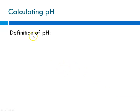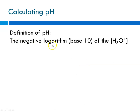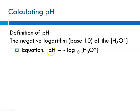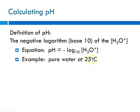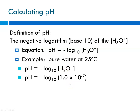How does this relate to calculating pH? The definition of pH is the negative logarithm base 10 of the concentration of the hydronium ion. In equation form: pH equals minus log base 10 of [H₃O⁺], where the brackets mean molarity (moles per liter). As an example for pure water at 25°C: pH equals minus log base 10 of 1×10⁻⁷. When you take the log of that value you get negative 7, but since pH is minus the log, pH equals 7.